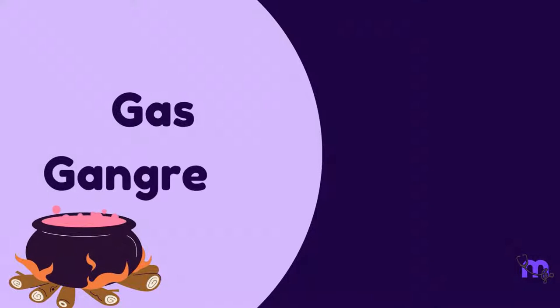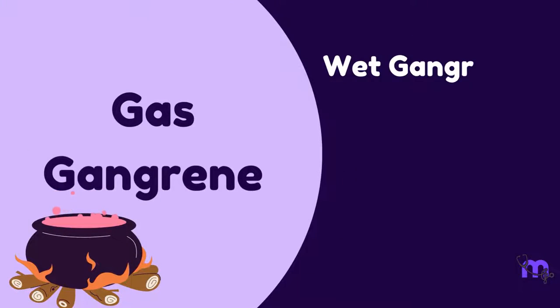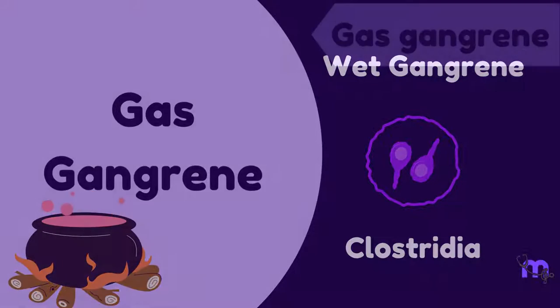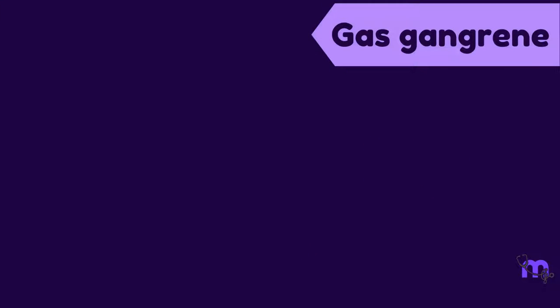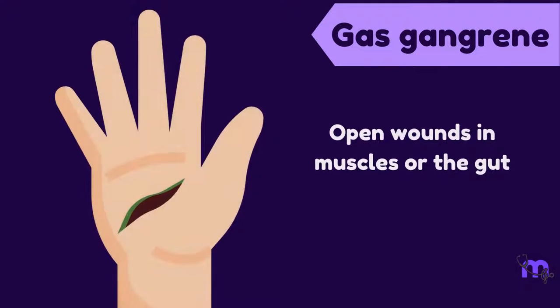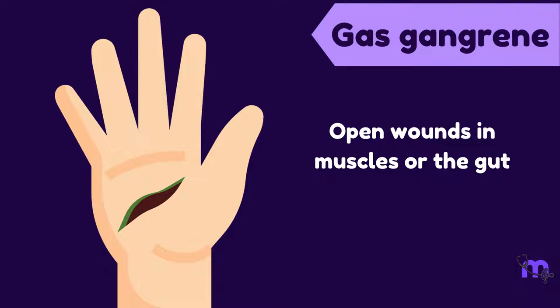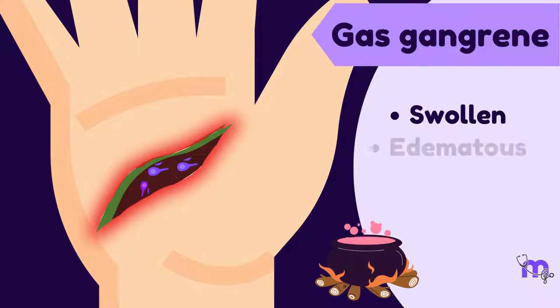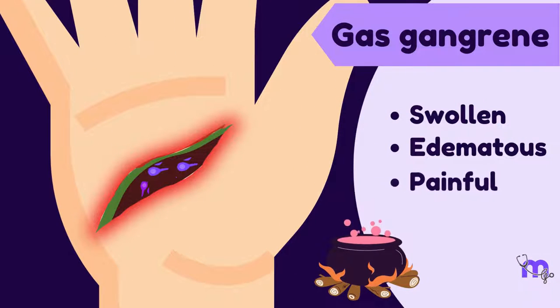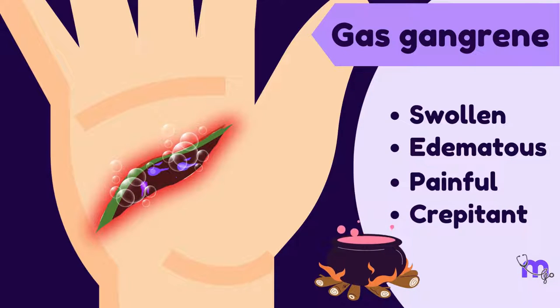A less commonly encountered gangrene is gas gangrene, which is a type of wet gangrene caused by Clostridia. It can be seen in open wounds in muscles or the gut. The tissue appears swollen, edematous, painful and crepitant due to gas bubble formation.